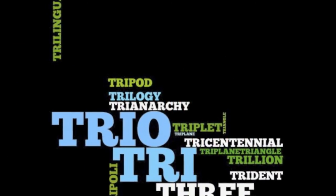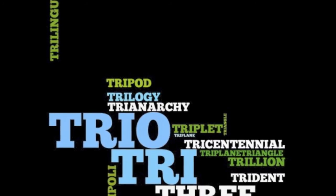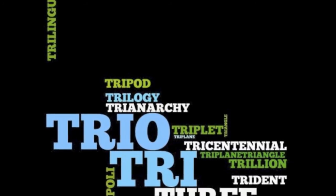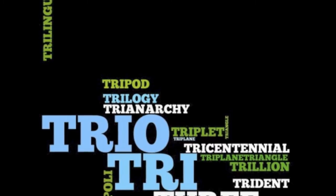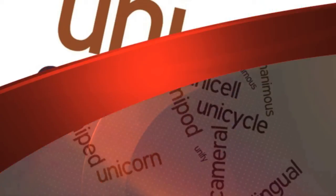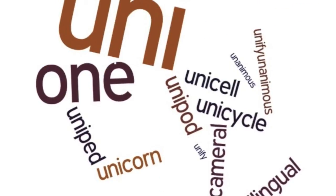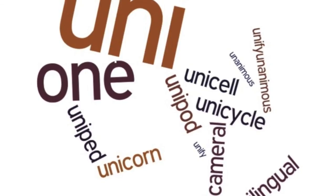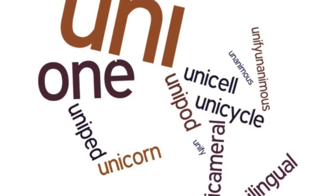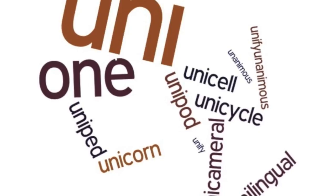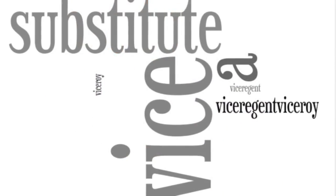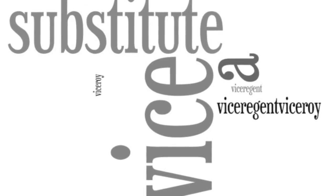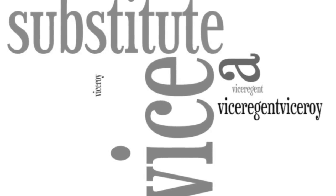Trio and tri of course means three, such as tricentennial, trillion, trident, tripod, trilogy, and triplets. Then uni of course is one: unipod, unicycle, unicameral, unilingual, uniped, unanimous, unify, and reunification. And vice means to substitute for, such as vice principal, viceroy, or vice president.